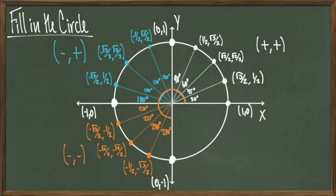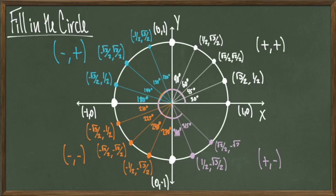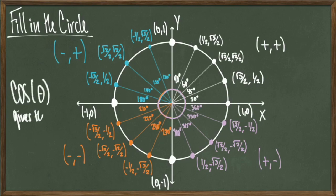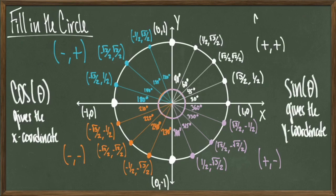Moving to the last quadrant, I look at the first quadrant and change all the signs of the y-coordinates. At 300 degrees I get (1/2, -root 3 over 2). At 315 degrees I get (root 2 over 2, -root 2 over 2). At 330 I get (root 3 over 2, -1/2). And at 360 I get (1, 0) — back to the start. That's essentially how you build the unit circle: look at the first quadrant using special right triangles, then make deductions about the signs to get the rest.